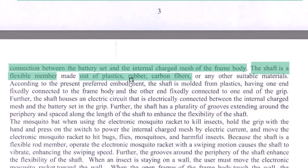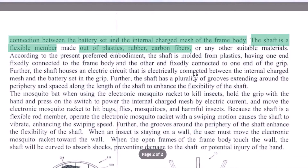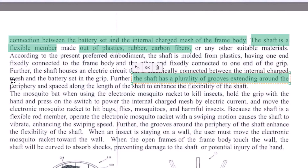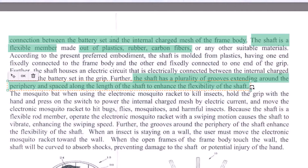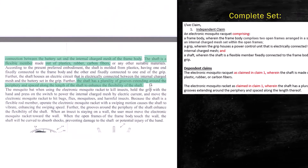Let's see if anything else is there. Since the entire invention is about the shaft, another dependent claim could be: 'The electronic mosquito racket as claimed in Claim 1, wherein the shaft has a plurality of grooves extending around the periphery and spaced along the length of the shaft to enhance the flexibility of the shaft.' This could be another dependent claim.